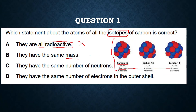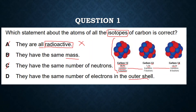The third option says they have the same number of neutrons. As stated before, the number of neutrons changes in isotopes, so this is also not correct. The fourth option — they have the same number of electrons — yes, electrons and protons are the same. So the answer is D.